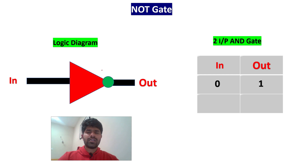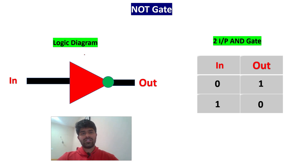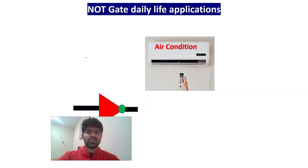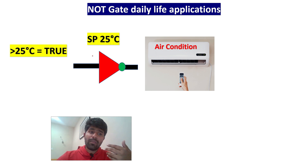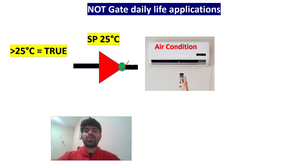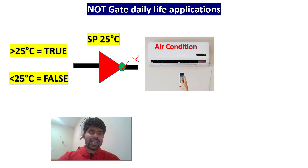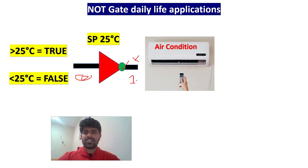NOT gate is very simple — if you say 'I love you' it will say 'I hate you'; if you say 'I hate you' it will say 'I love you'. If input is zero, output will be one; if input is one, output will be zero. Where we use it: in air conditioning, I set the temperature to 25 degrees Celsius. If the temperature goes above 25 degrees, the NOT gate will cut the power to the air conditioner. If it goes less than 25, the output becomes one and the AC turns back on.